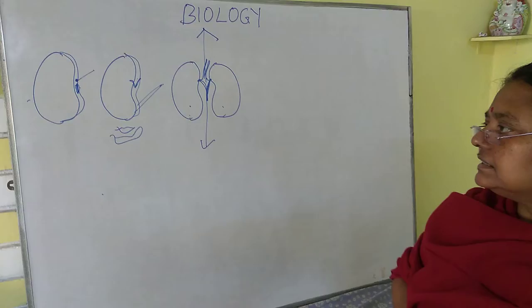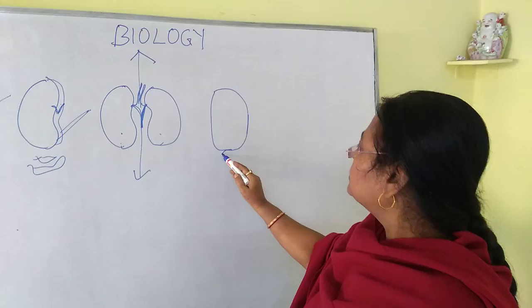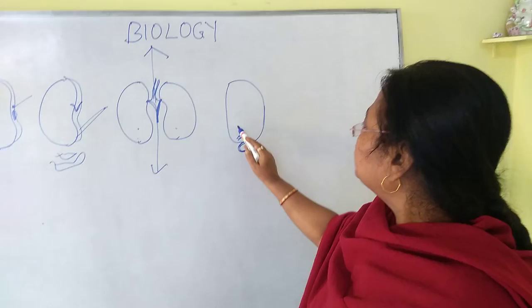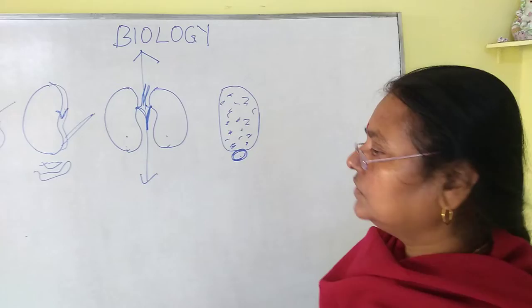Let's consider a dicot seed which is albuminous — the example is castor. In castor, the seed is roughly oval in shape. It has got a protuberance on one side known as the caruncle, which masks the hilum and micropyle. The testa is variegated with silver markings on a brown background and is hard — it has to be shelled off.